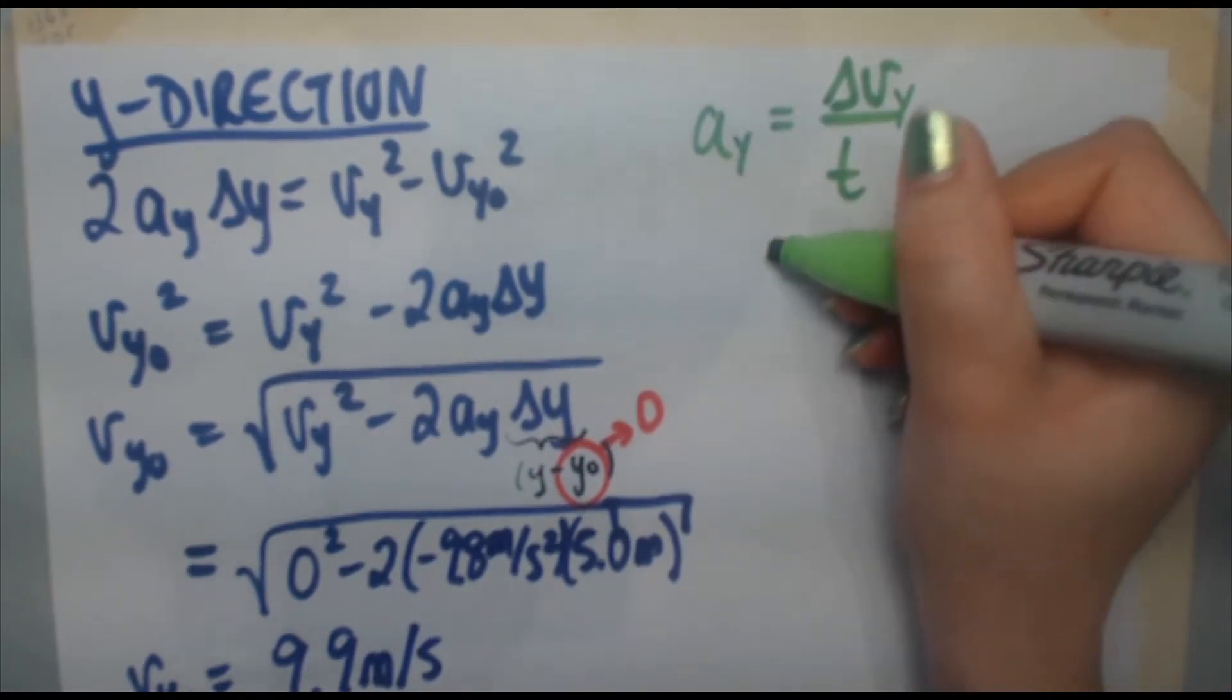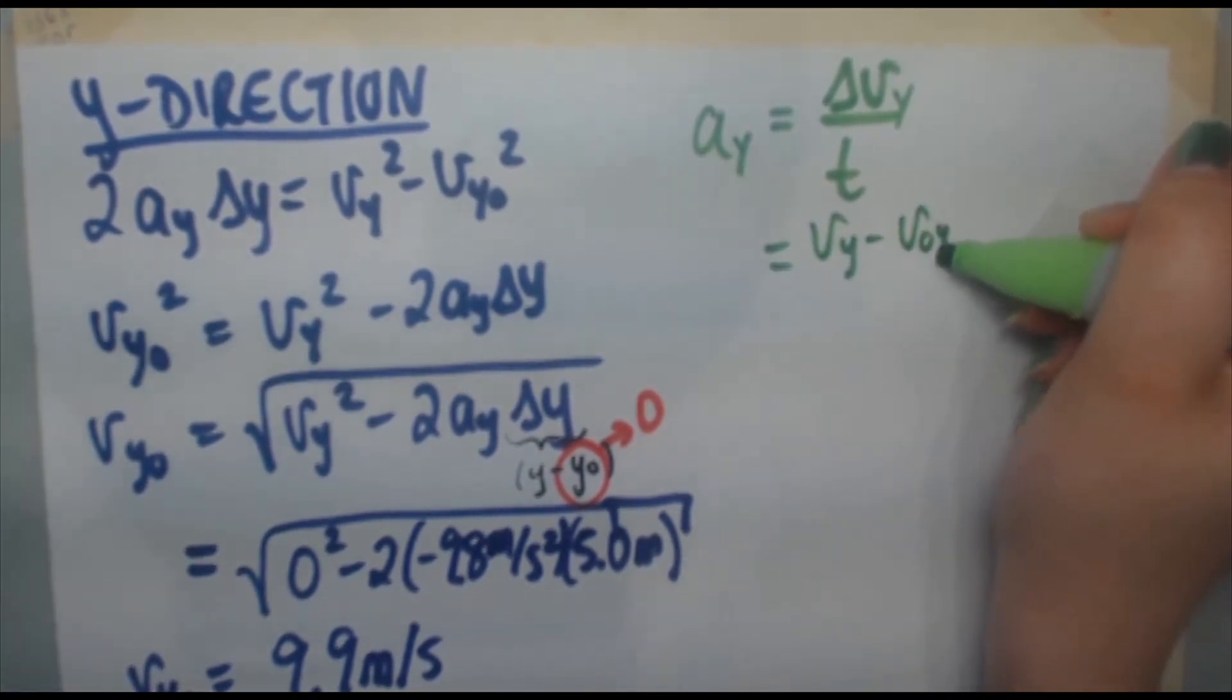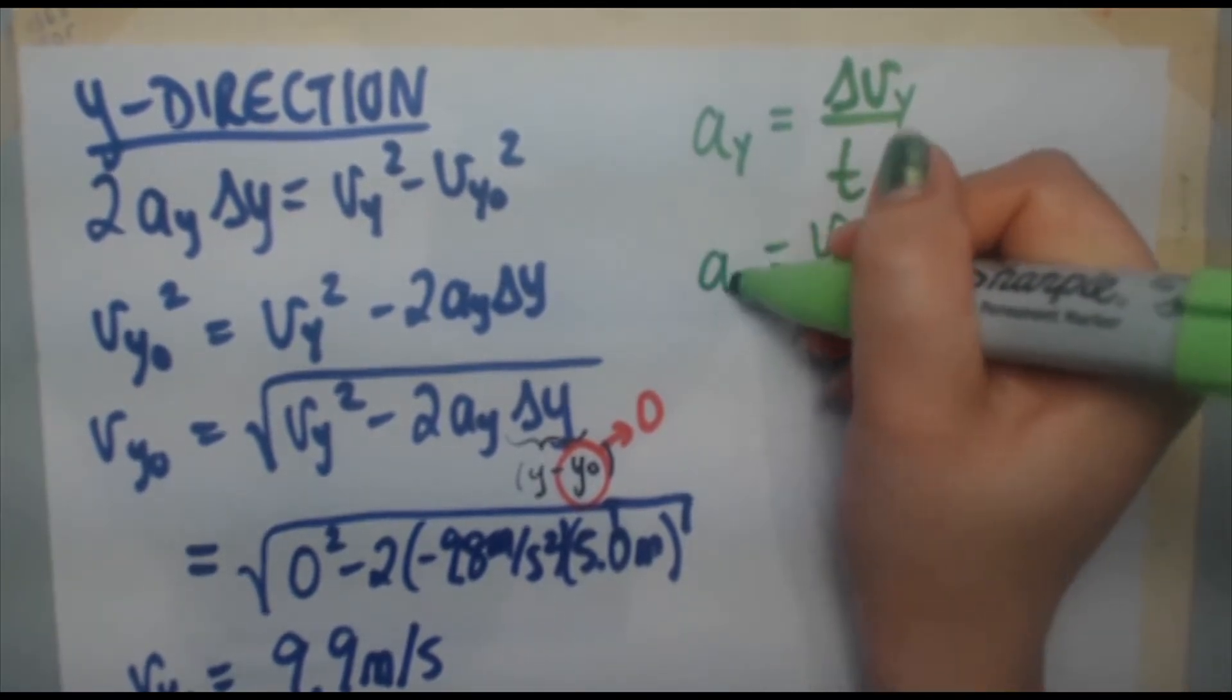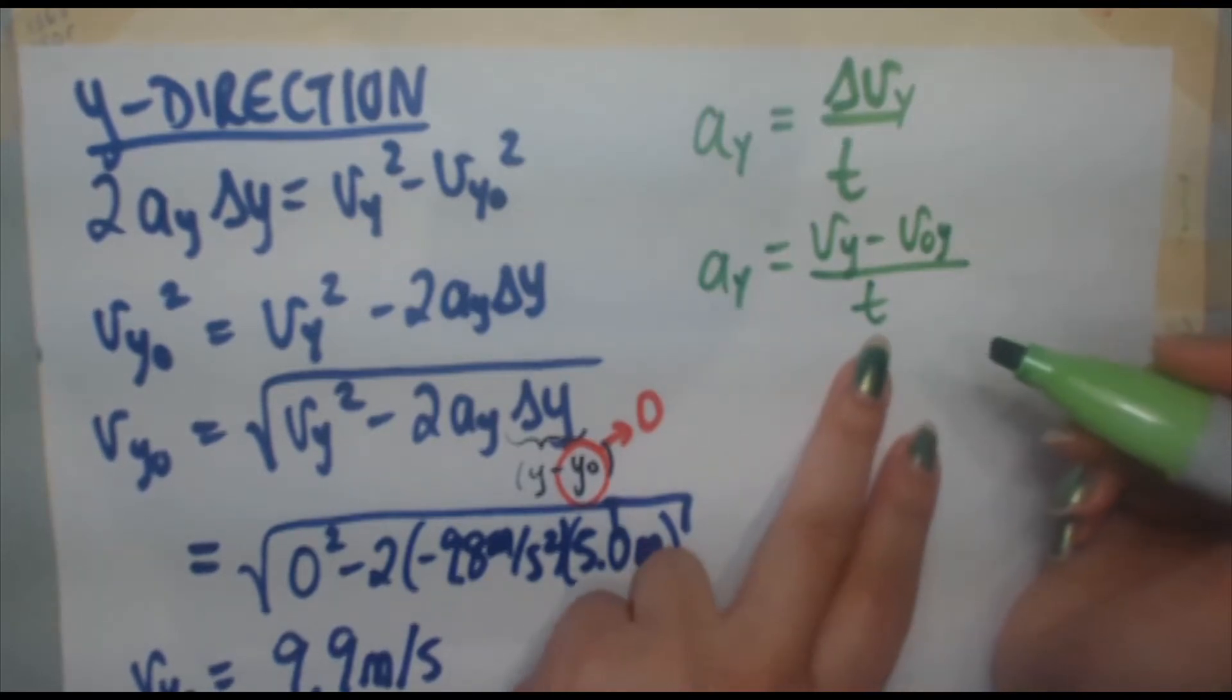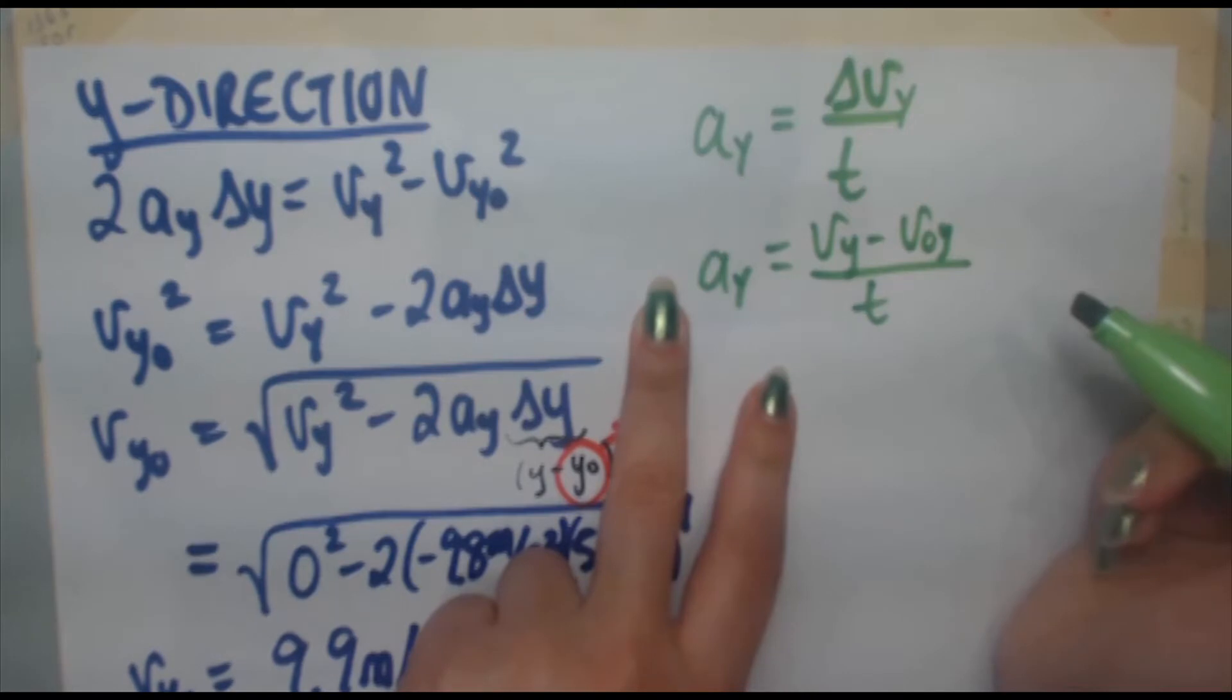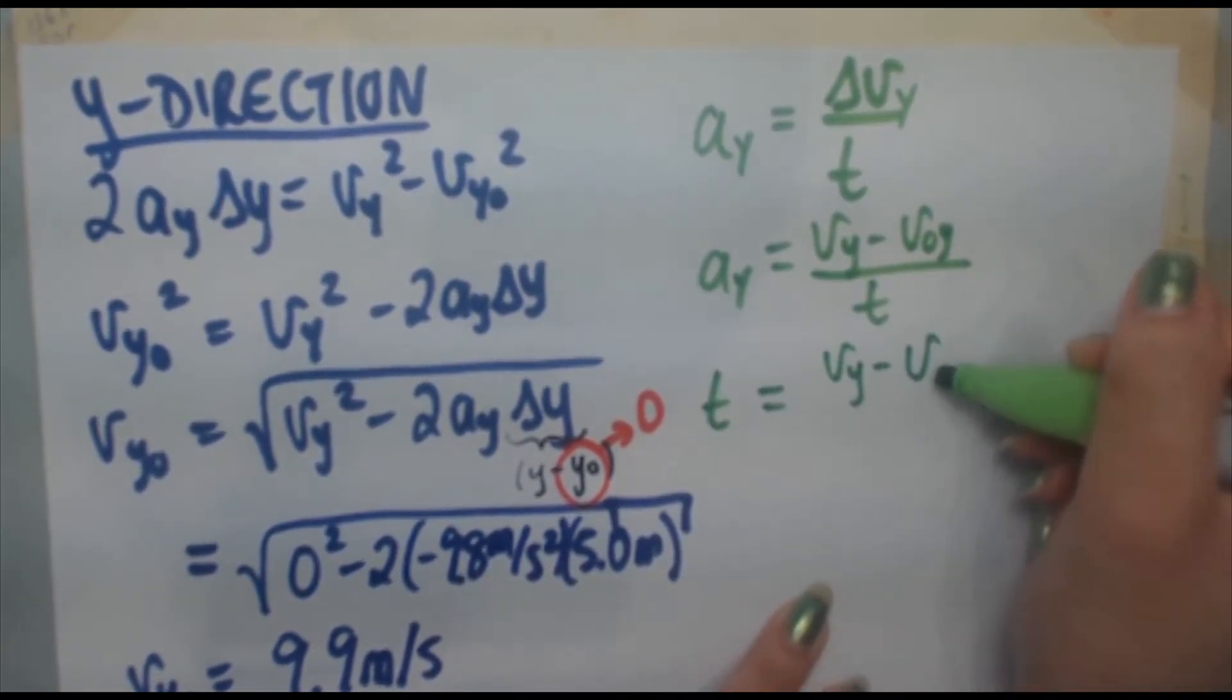We're looking for time. So let's rearrange this for time. You need to multiply both sides by time, divide both sides by acceleration y. You're going to end up with t = (vy - v₀y) / ay. Now we know everything here. We can determine time.